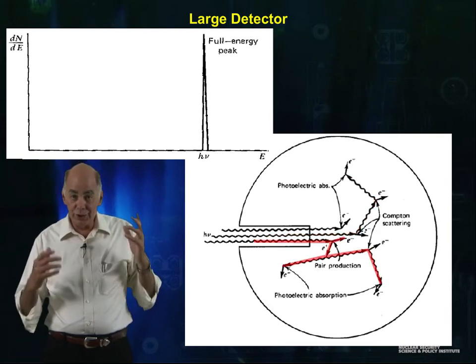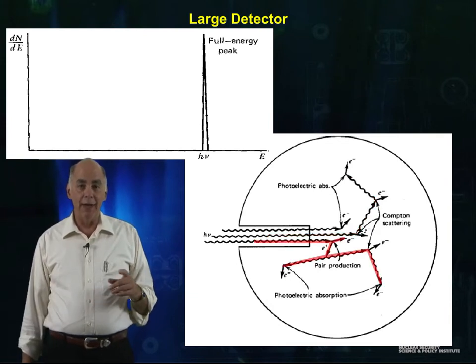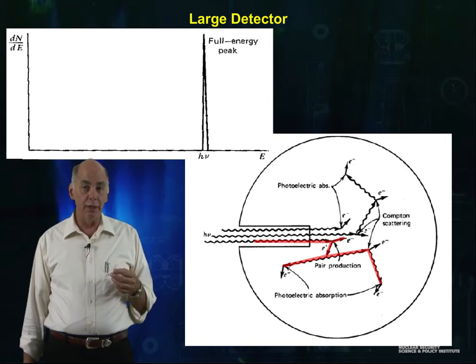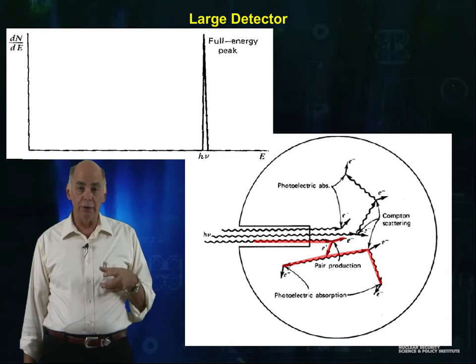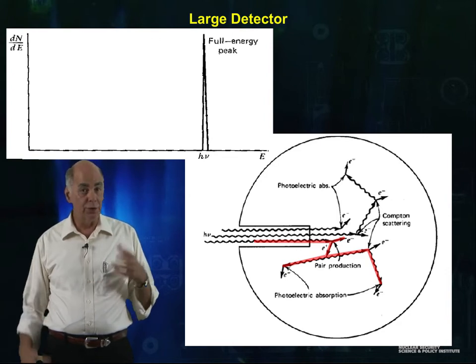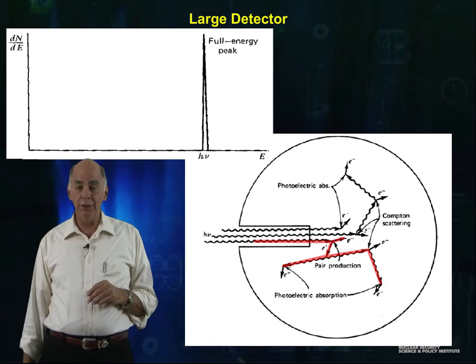Pair production, it's the same game. A gamma has a pair production event, and the 511 KeV photons are both captured within the detector, and so everything shows up as a full energy peak.